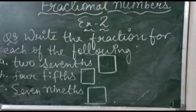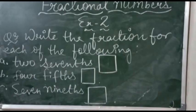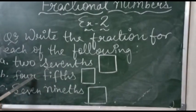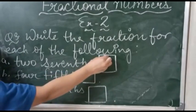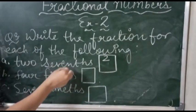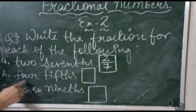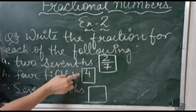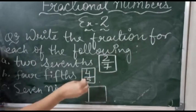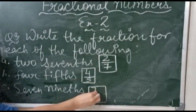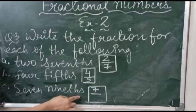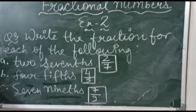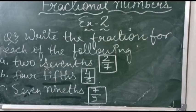Now the next question: write the fraction for each of the following. You can see here: two over seven, four over five, and seven over nine. Two is written in the numerator place and seventh in the denominator place. Then four in the numerator and fifth in the denominator. Then seven in the numerator and ninth in the denominator.